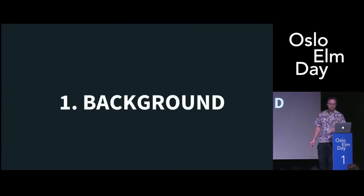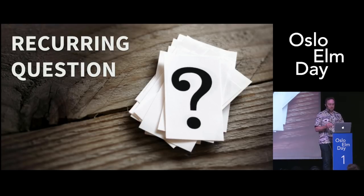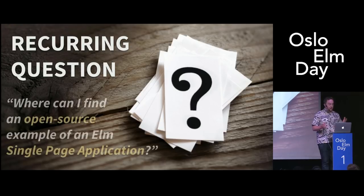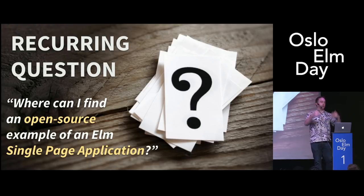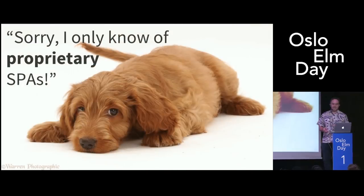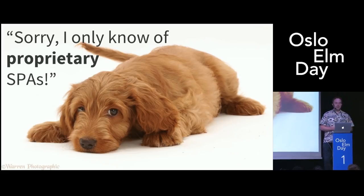So let's start with some background. Like, what is this thing? I used to get this recurring question all the time — one of the most common questions from people asking things about Elm: where can I find an open source example of an Elm single page application? A single page application where Elm controls the routing, like the URL of the page. And I used to always have to give this really unfortunate answer: sorry, I only know about proprietary ones. Maybe you could ask one of them if you can see their code — which is not a great answer. You want to be able to just link people to something.